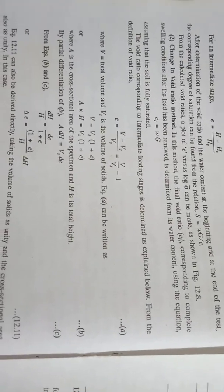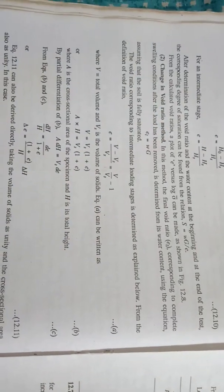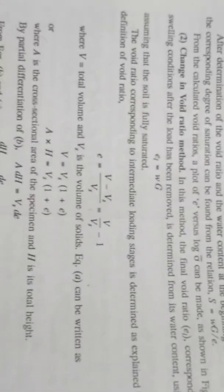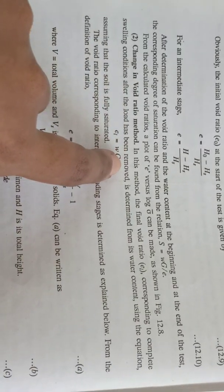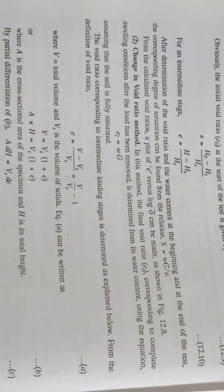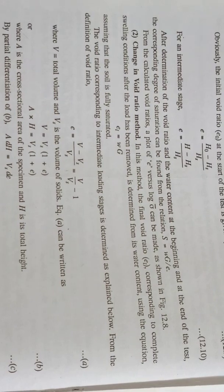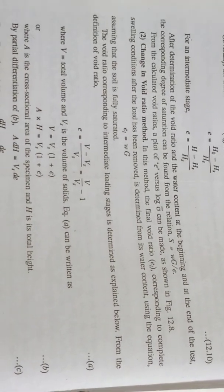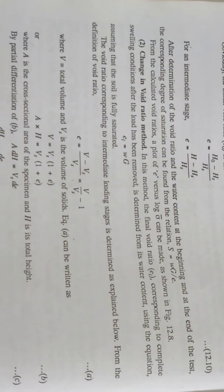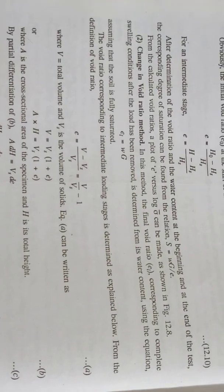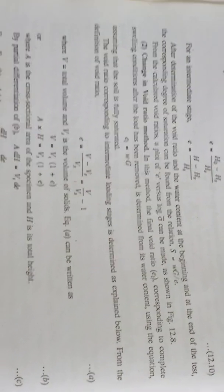There are two methods: the first is the height of solid method, and the second is the change in void ratio method. In the change in void ratio method, the final void ratio corresponds to complete swelling conditions after the load has been removed. The void ratio adjustment involves loading, unloading, and setting the void ratio to zero.